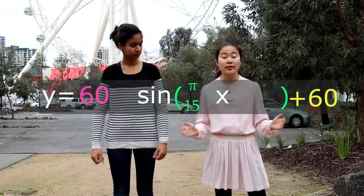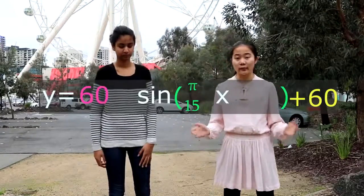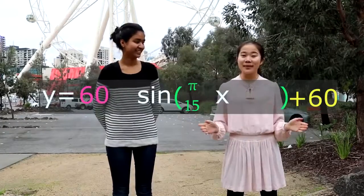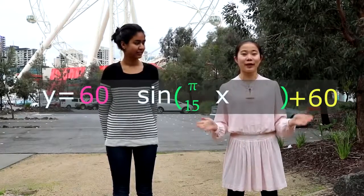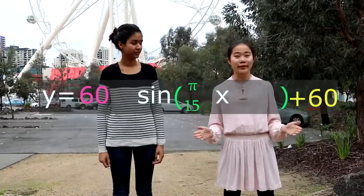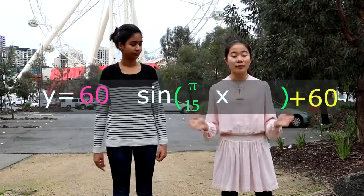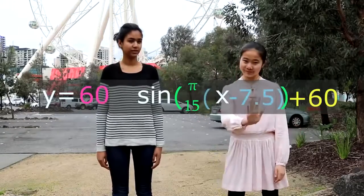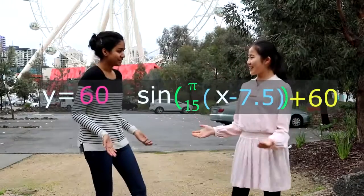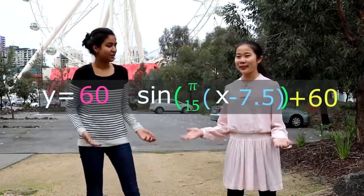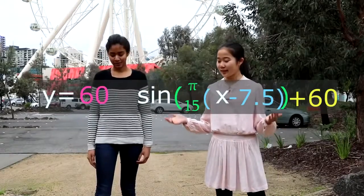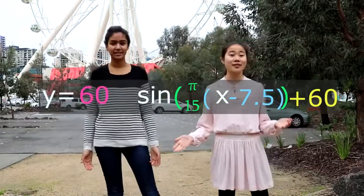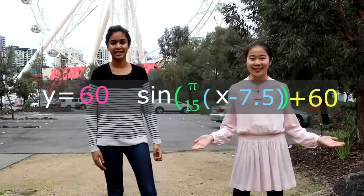Our current model starts at the zero angle mark. However, I can only get into the car on the ground, which means I have to move my graph forward by a quarter of a period. So we translate the graph 7.5 units in the positive direction of the x-axis. This gives our final equation: y equals 60 sine of (pi on 15)(x minus 7.5) plus 60.